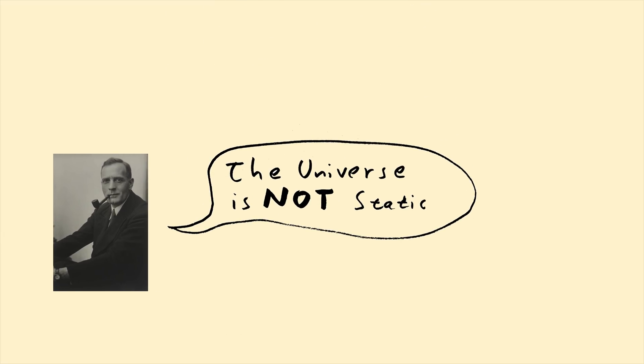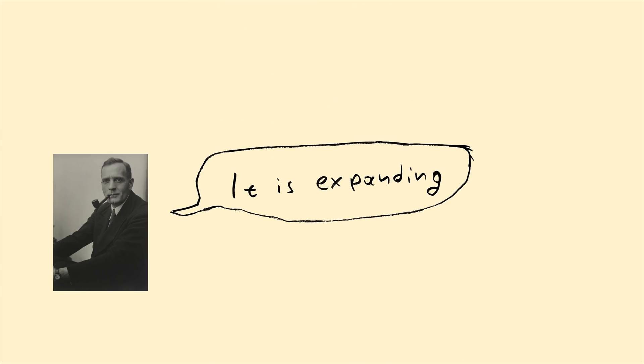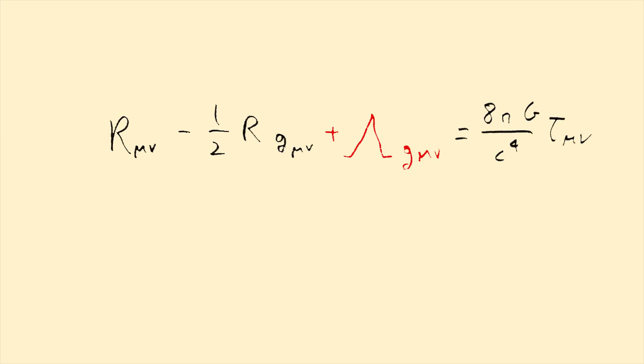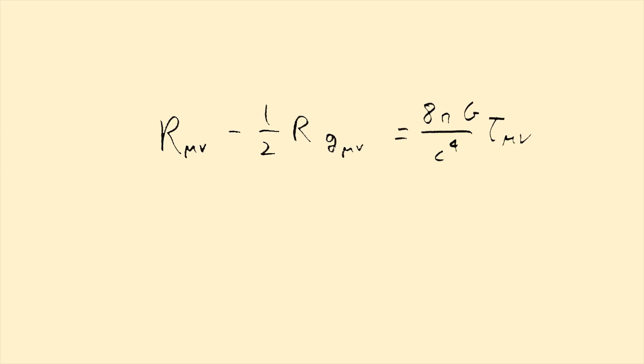He found that the universe wasn't static. It was expanding. The further away he pointed his telescope, the faster the galaxies were moving away from us. So, Einstein thought, lambda wasn't needed anymore. And he removed it from his equations.